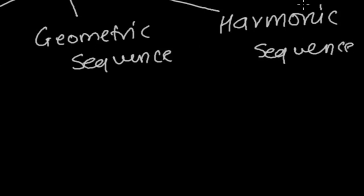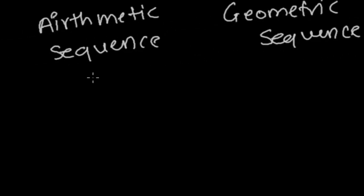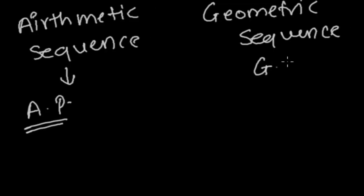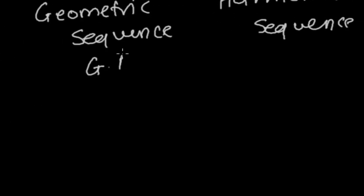Sometimes you may see this as Arithmetic Progression, written as AP. This one is Geometric Progression, sometimes written as GP. And you may see the third as Harmonic Sequence or Harmonic Progression, abbreviated as HP.